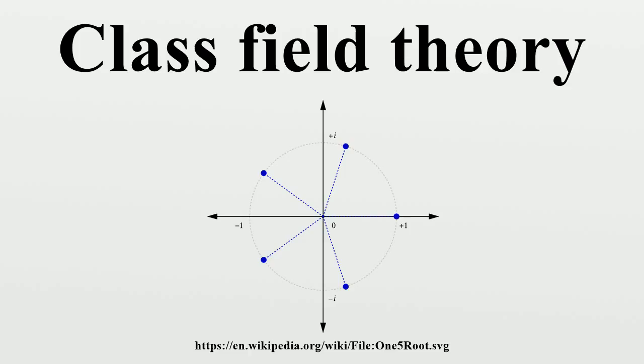There is an isomorphism from the maximal abelian quotient of the Galois group of the extension with the quotient of the ideal class group of K by the image of the norm of the ideal class group of L.